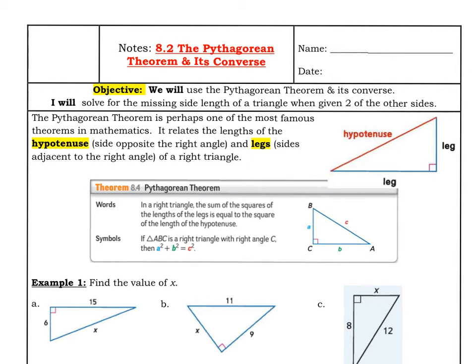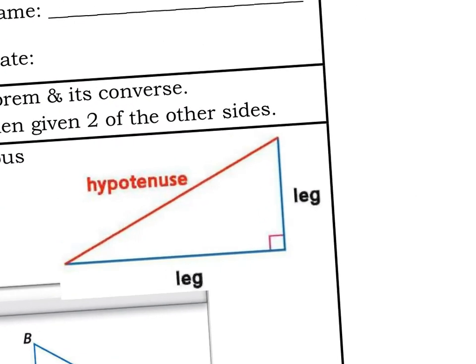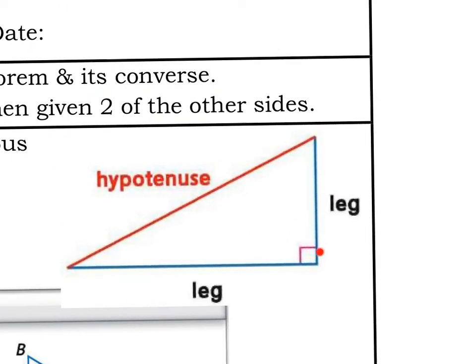To use the Pythagorean Theorem, you need to have a right triangle and be able to identify the hypotenuse. The hypotenuse is the longest side of a triangle, and it's always opposite the right angle. So if you draw a line from the right angle, it will point to the hypotenuse. If your teacher gives you triangles turned this way and that, just look for the right angle sign and look for it pointing to the hypotenuse.